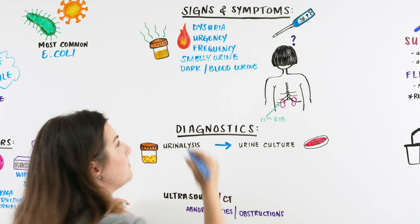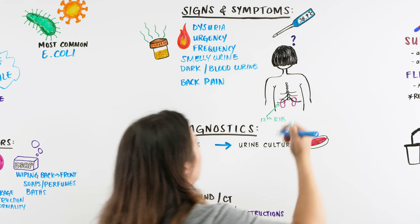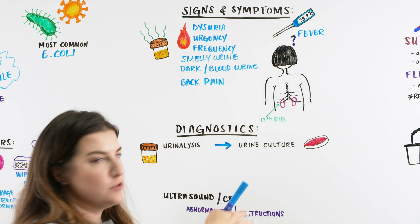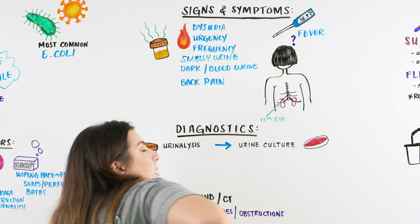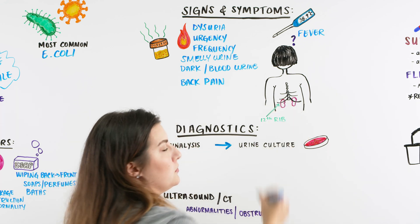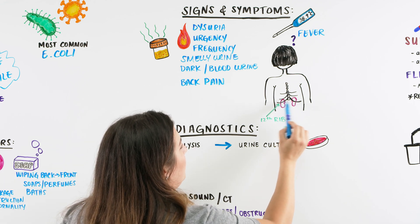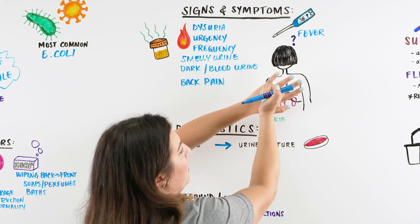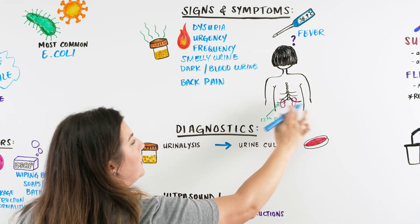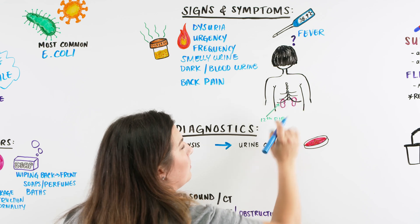The patient may also complain of back pain, or mention they've been spiking a fever or feeling sweaty. When we talk about back pain, we want to assess where it is — they might point to the flank area. We can check for costovertebral angle (CVA) tenderness: place one hand flat on the back at the 12th rib, palpate that area, and ask if it's tender. CVA tenderness indicates there may be something going on with the kidneys.